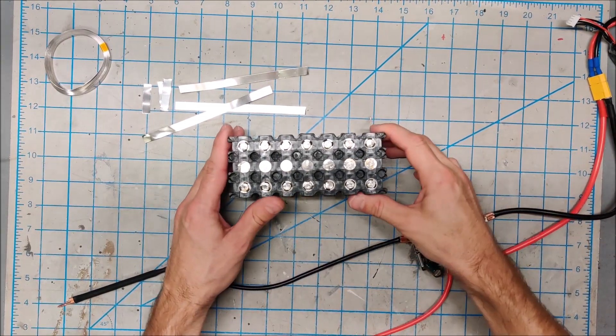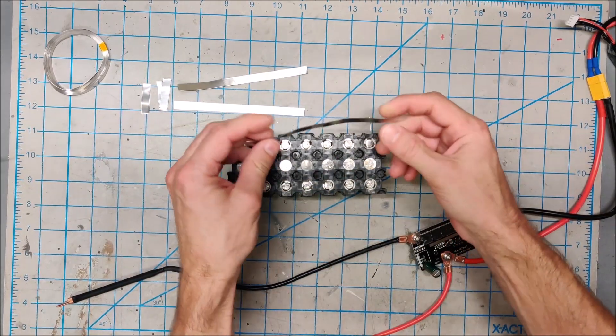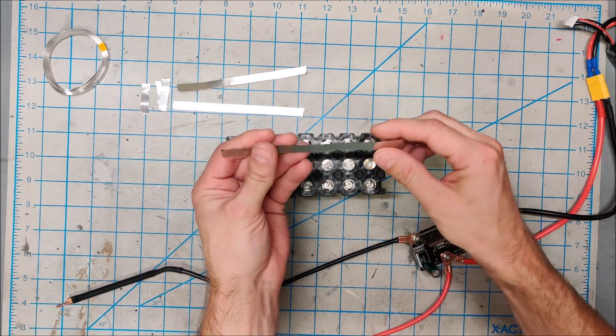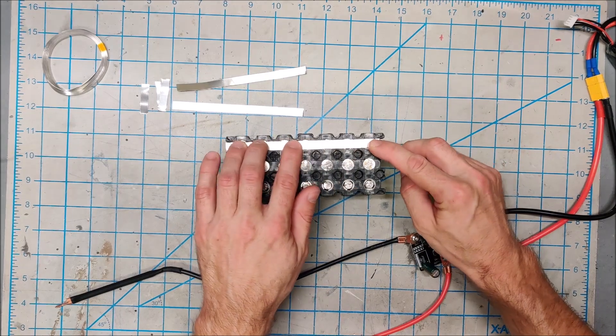Okay, it is time to finish spot welding this battery. I received my 0.1 millimeter nickel from Amazon. This is 0.1 millimeter by 8 millimeter and I think it fits just about perfectly in this battery.